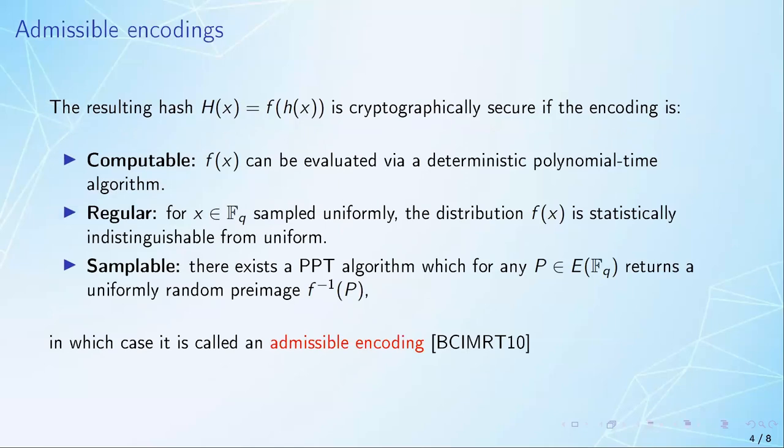We obtain a hash function by first hashing into the field and then encoding the field element to a point in the curve. It can be shown that this is a cryptographically secure hash as long as three conditions are met. The encoding has to be efficiently computable,